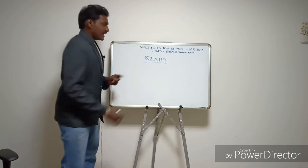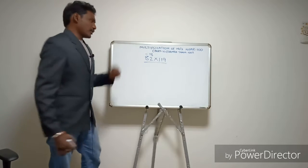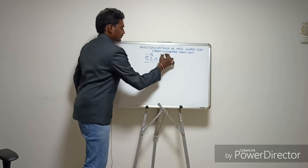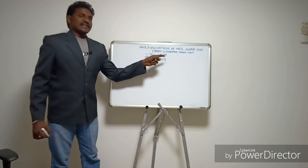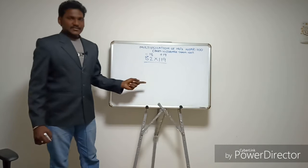Next example: 82 times 119. 82 is minus 18 from 100, and 119 is plus 19. Cross-adding: 82 plus 19 equals 101, or 119 minus 18 equals 101.